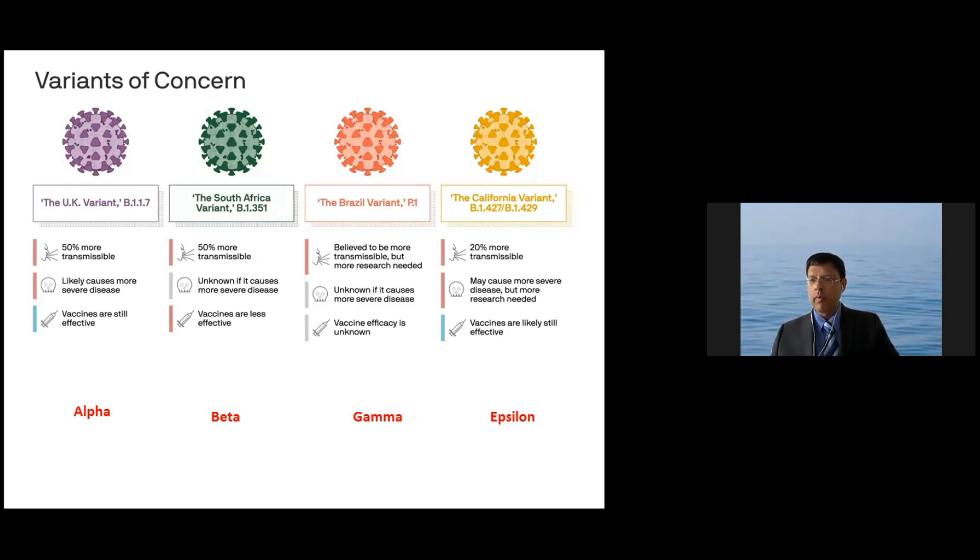Alpha is 50% more transmissible, it's more likely to cause more severe disease, and vaccines are still effective. When it comes to the beta variant, 50% more transmissible, it is unknown if it causes more severe disease, but vaccines are less effective, and that has to be remembered. The gamma variant is believed to be more transmissible, but more data is needed. It's unknown if it causes more severe disease, and finally, the vaccine efficacy is uncertain at the moment because still more studies are needed.